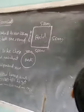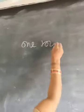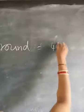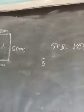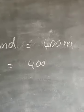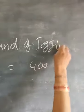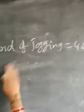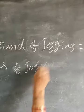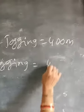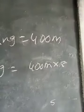One round of jogging equals 400 meters. He ran eight rounds. Eight rounds of jogging equal 400 meters multiplied by 8.